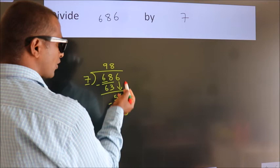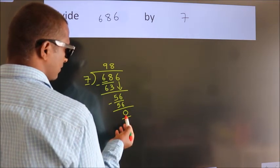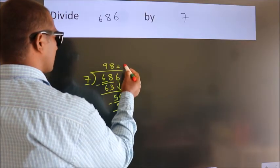After this, no more numbers to bring it down. And we got remainder 0. So, this is our quotient.